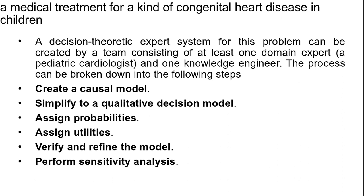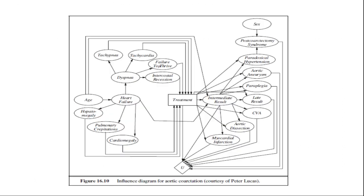Sometimes variables will have to be split or joined to match the expert's intuition. For example, the original aortic coarctation model had a treatment variable with values — surgery, angioplasty, and medication — and separate variables for the timing of each treatment. But the expert had a hard time thinking of these separately, so they were combined, with treatment taking on values such as 'surgery in one month.' This gives us the model shown in the influence diagram for aortic coarctation — which we can refer to in short as AC.